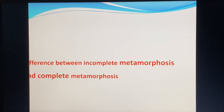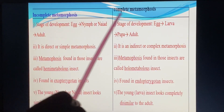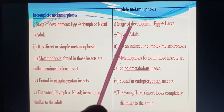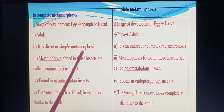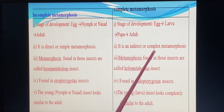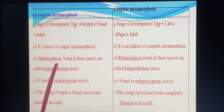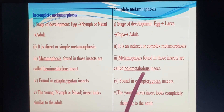Incomplete metamorphosis and complete metamorphosis: in incomplete metamorphosis, the stages of development go directly from nymph to adult — it is called direct or simple metamorphosis. The metamorphosis found in those insects is called hemimetabolous. Complete metamorphosis is found in endopterygotes.